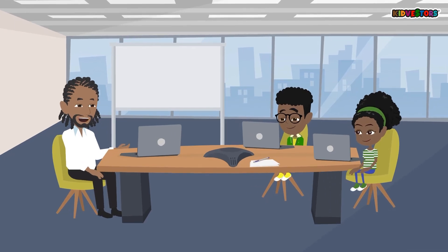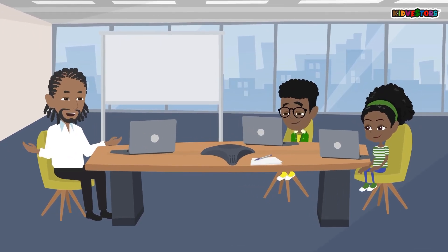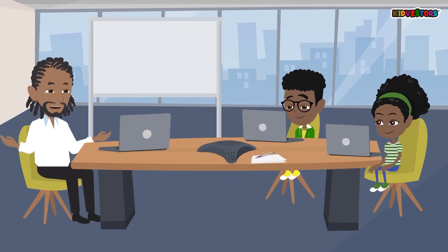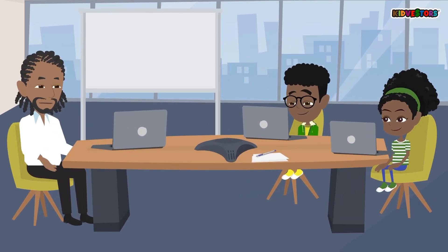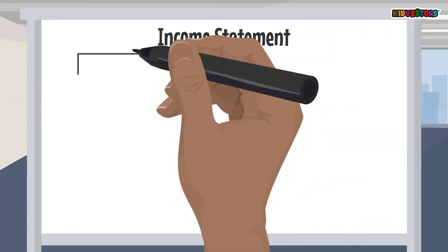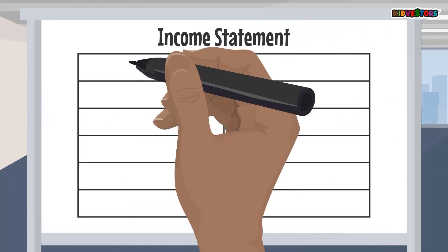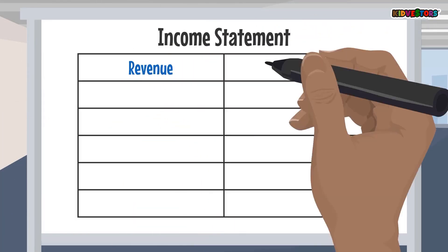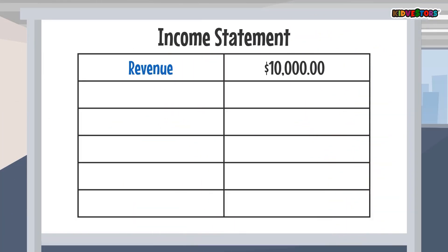Check this out. Hold on to your seats because I have to break this down for you. At the top, you have your revenue, or the amount of money your business plans to make. This is similar to the gross income you would earn from a job.